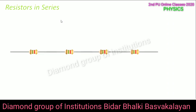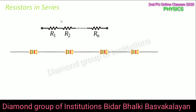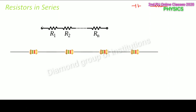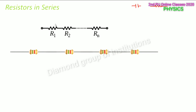When resistors are connected in series, one end of one resistor starts the next resistor, then the end of the second resistor starts the third, and so on. In a circuit diagram a resistor is represented by its standard symbol. In a series combination, the same amount of current flows through all the resistors in the circuit.